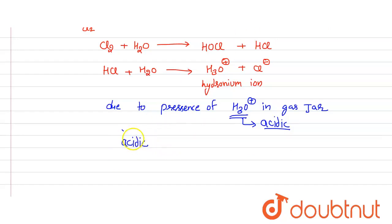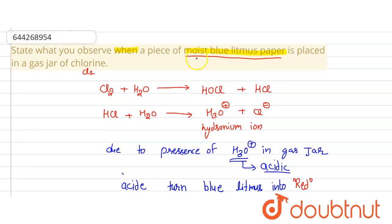Acid turns blue litmus into red. So here, blue litmus turns into red color. This is our answer, thank you.